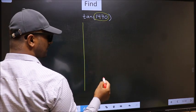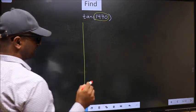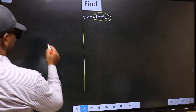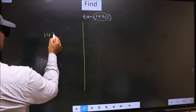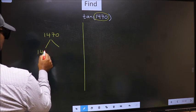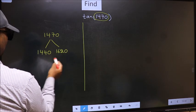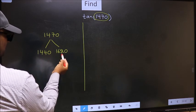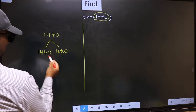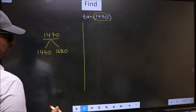1470 lies between which two multiples of 180. What I mean is, 1470 lies between 1440 and 1620. This is 180 into 8 and this is 180 into 9. Between these two numbers, 1470 lies.